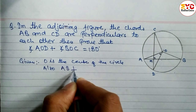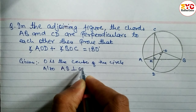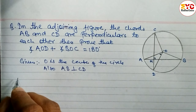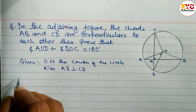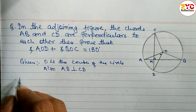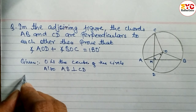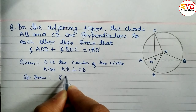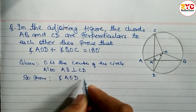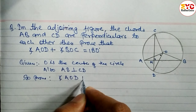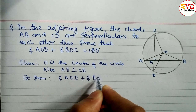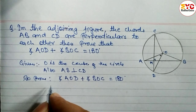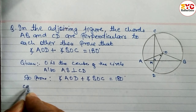So we write: AB perpendicular to CD. After that we write 'To Prove' and 'Construction'. Under 'To Prove', we write: angle AOD plus angle BOC is equal to 180°. Now, what construction do we have to do?